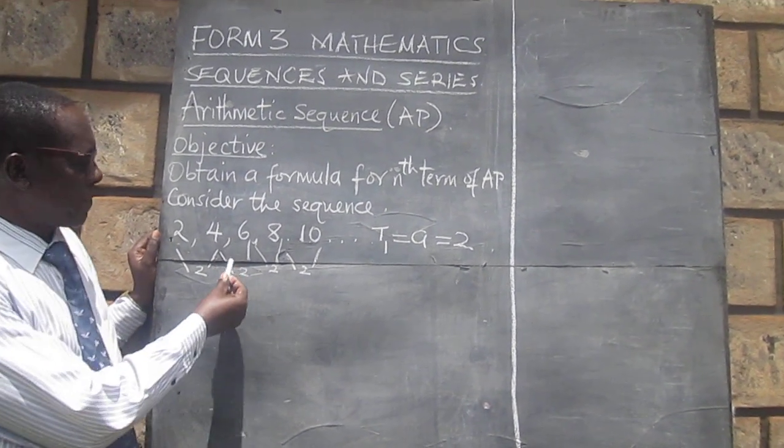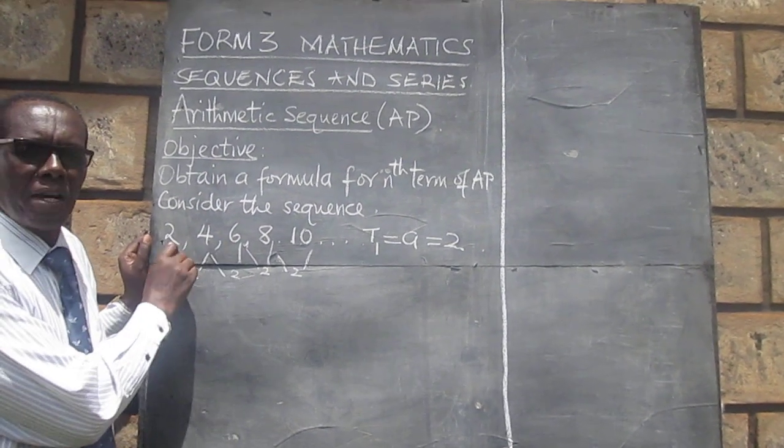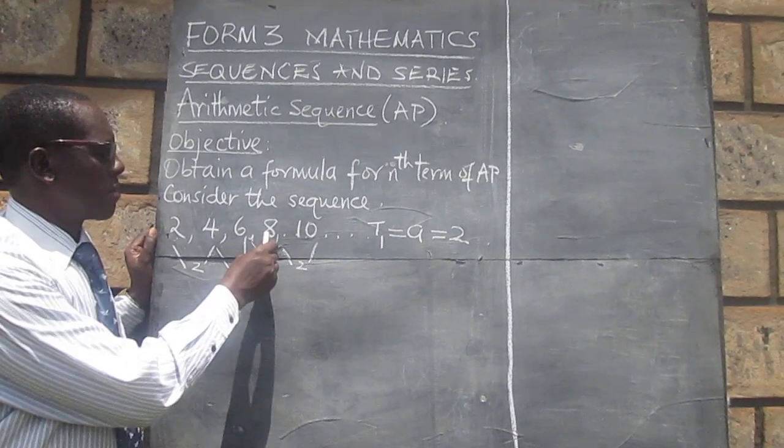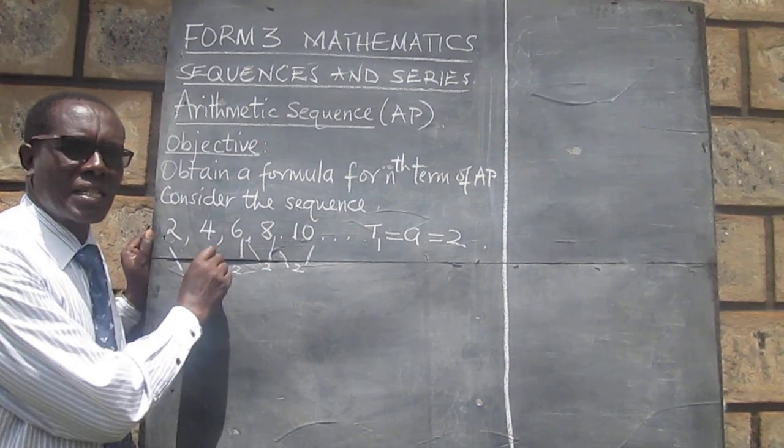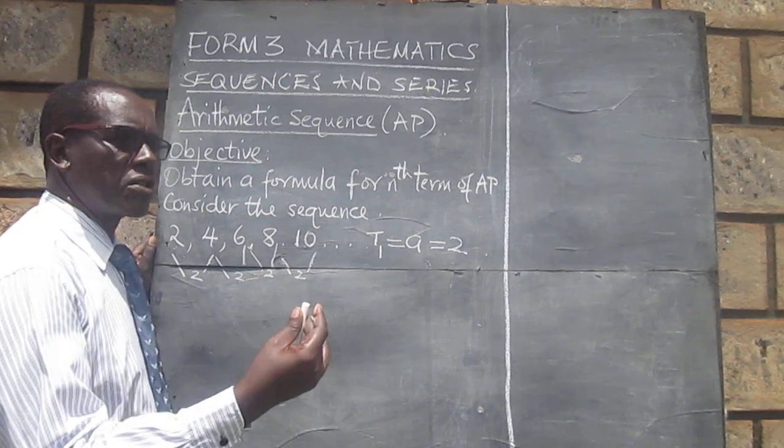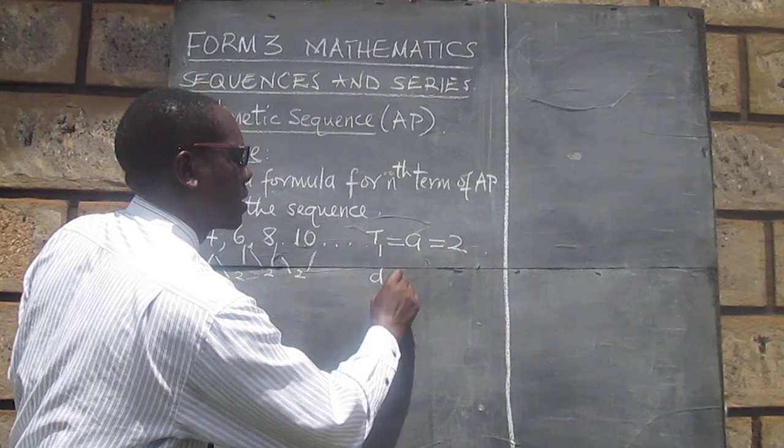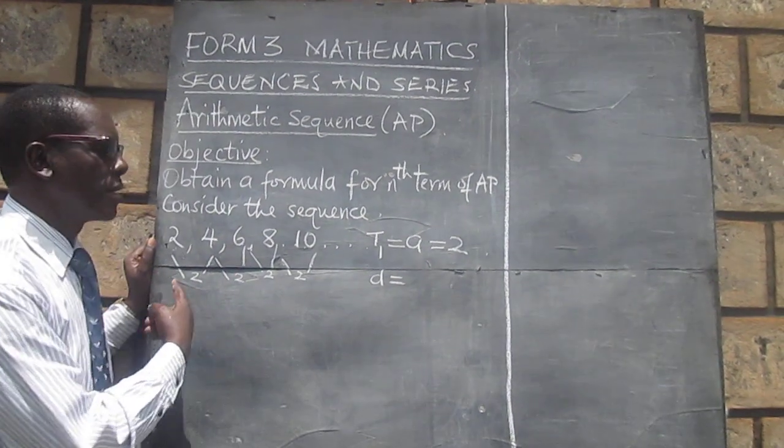We have said there is a common difference. That is, when you take the second term, subtract the first term, you get 2. The third term, subtract the second, you also get 2. That difference is normally represented by the letter D, and in this case again is 2.